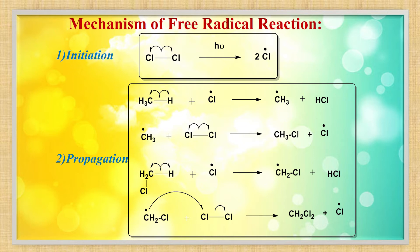Each chlorine free radical attacks the hydrogen atom of methane, replacing the hydrogen, and preparing a new free radical — CH3• called methyl free radical. This methyl free radical then attacks Cl2 to form CH3Cl and one more Cl• free radical. These two steps are called propagation.